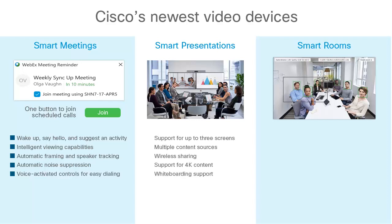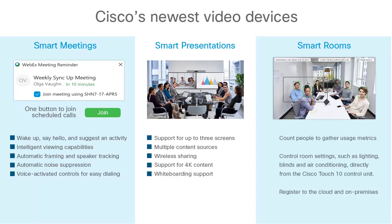Smart Presentations are enabled through support for up to three screens and multiple content sources. Easy sharing is enabled through wireless sharing and support for 4K content, making for crystal-clear presentations. Whiteboarding support is also available across the portfolio. Smart Room features count people to gather usage metrics and support better resource allocation. Control room settings such as lighting, blinds, and air conditioning directly from the Cisco Touch 10 control unit. Most of our devices also offer the flexibility to register to the cloud and on-premises.